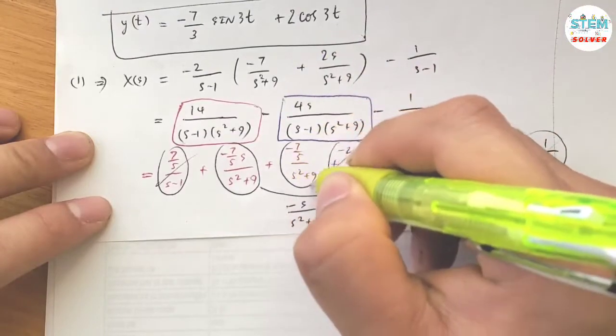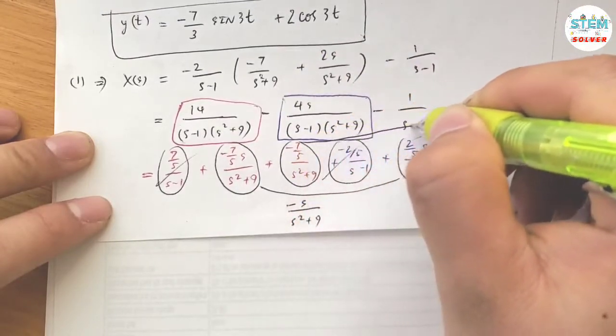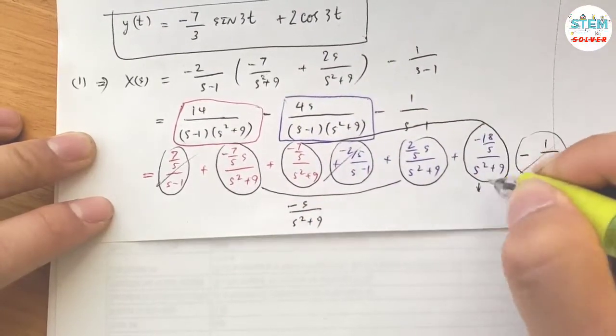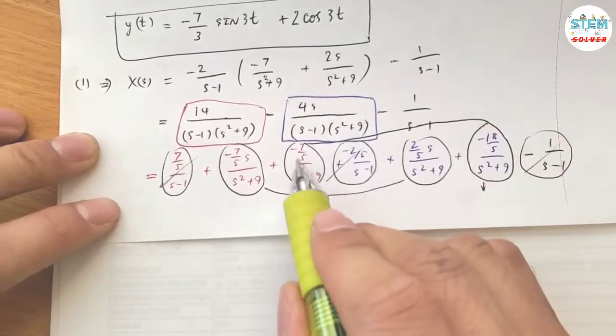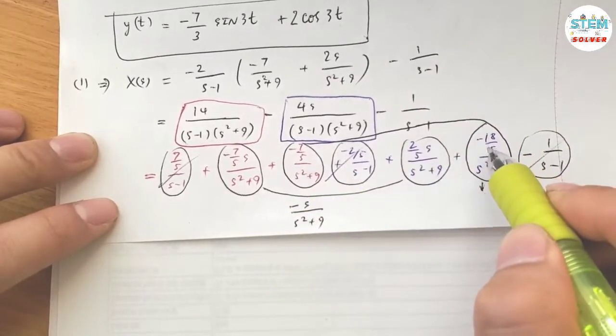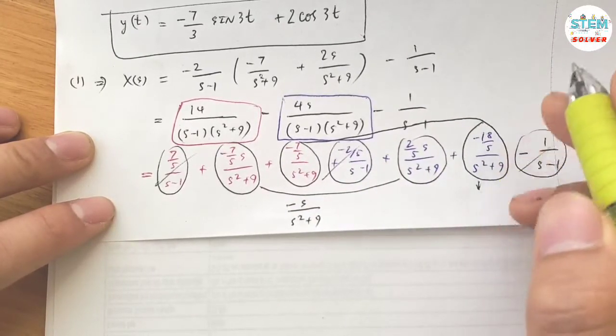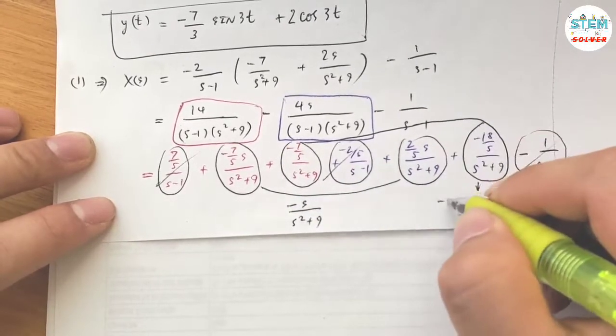Combine these together: negative 7 and negative 18 give negative 25, which equals negative 5 over (s squared plus 9). Now apply the inverse Laplace transform.